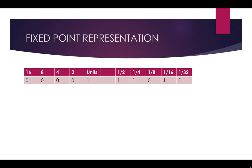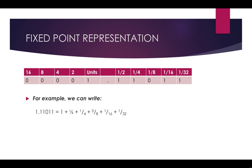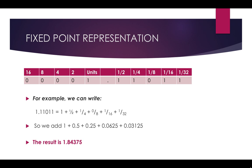We've got a binary number which is 1.11011. We can write 1.11011 as 1 plus half plus a quarter plus 0 over 8 plus 1 over 16 plus 1 over 32. In other words, we can add 1 plus 0.5 (half) plus 0.25 (a quarter) plus 0.0625 (which is 1/16) plus 0.03125 (which is 1 over 32).